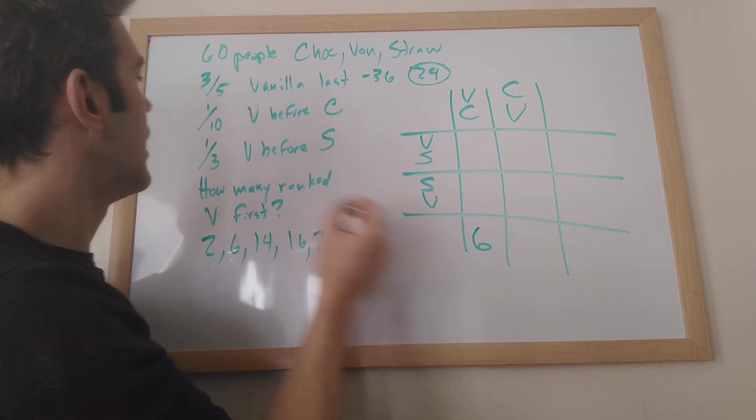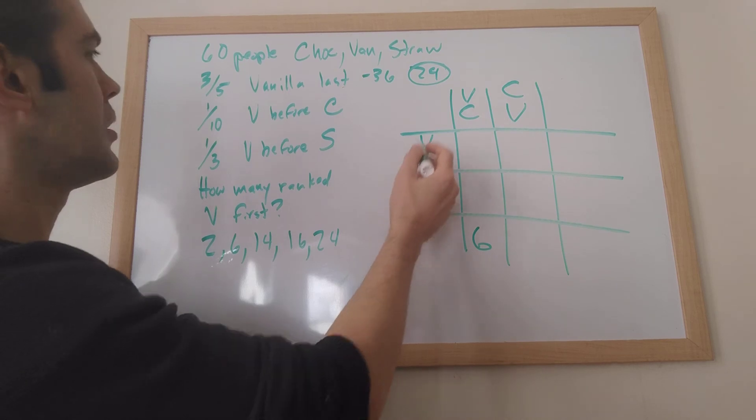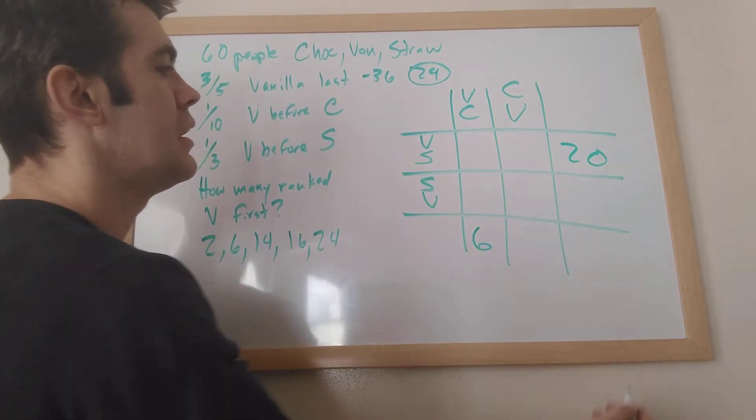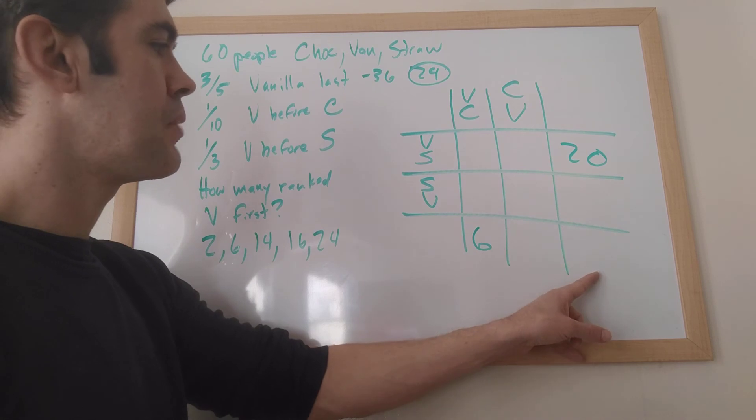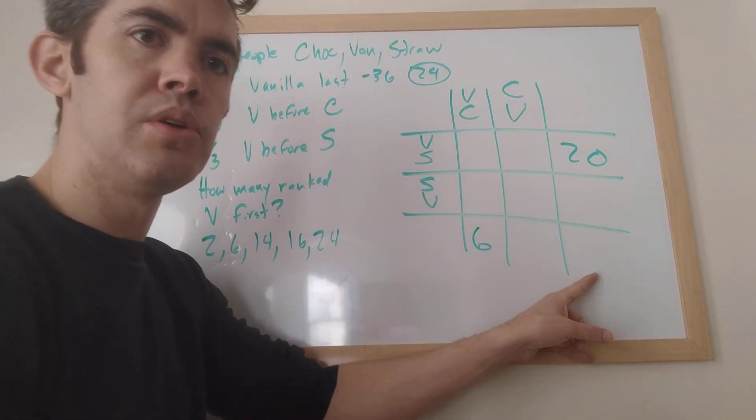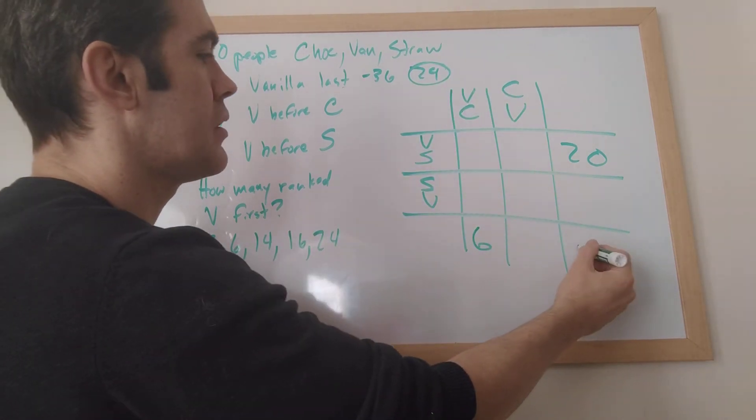One-third of everybody ranked vanilla before strawberry. So one-third of everybody is 20. Vanilla before strawberry, so 20 goes here. And everybody goes down here. Except it's not 60 because we've already eliminated the people. This is only people who didn't rank vanilla last. So this total down here is 24.